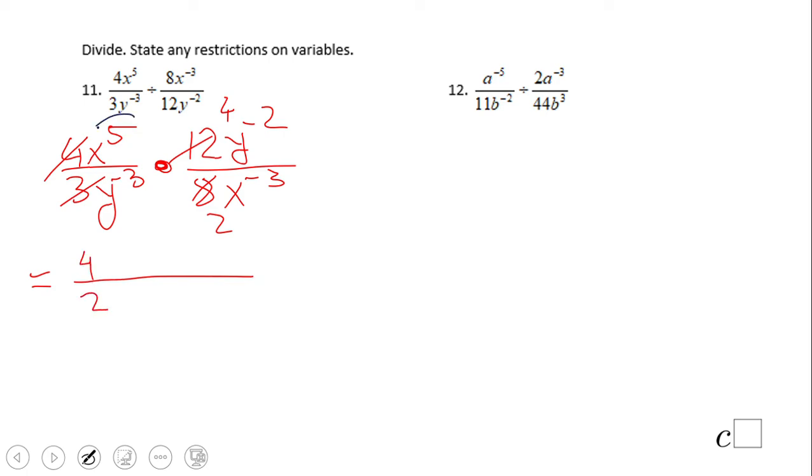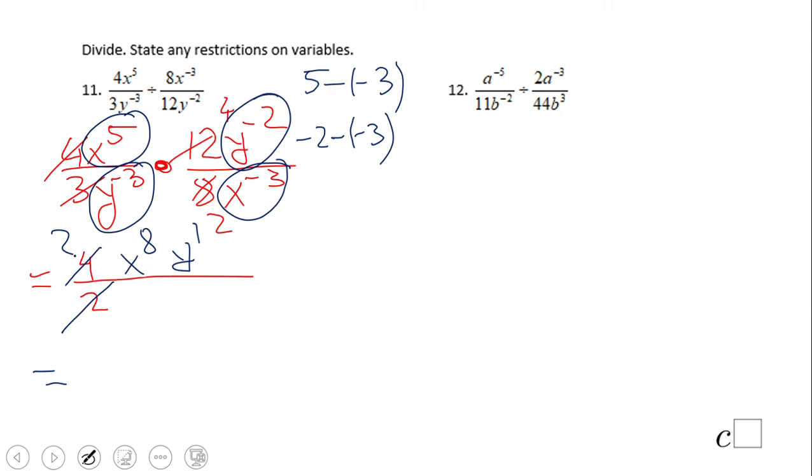Now look at x to the fifth over x to the negative 3 power. We're gonna use the quotient rule: 5 minus negative 3, that would be positive 8, so x to the 8th. Same with the y's: negative 2 minus negative 3 is positive 1. 2 goes into 4 two times, so the final answer is 2x to the 8th power y.